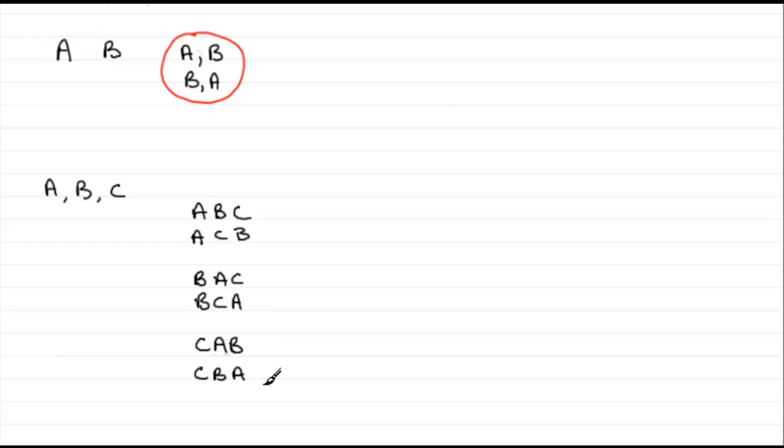BCA and so on. OK, six of them. That was given by three factorial, three times two times one.